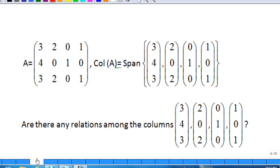Recall the definition of a column space of A. It is a vector space spanned by the columns of A. This means it is a space spanned by 3 4 3, 2 0 2, 0 1 0, and 1 0 1.